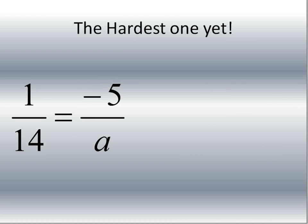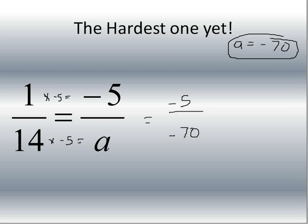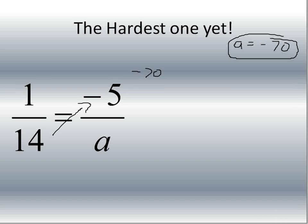Now the hardest one — we've got some negative numbers. We have 14 over 1 equals a over negative 5. Using the 'what happened' method: 1 times negative 5 equals negative 5, so I multiply both top and bottom times negative 5. 14 times negative 5 gives negative 70 over negative 5 over 1... so a is equal to negative 70. Using cross-multiplying: 14 times negative 5 gives negative 70, divided by the remaining number 1. Negative 70 over 1 gives us negative 70. That's our final answer.